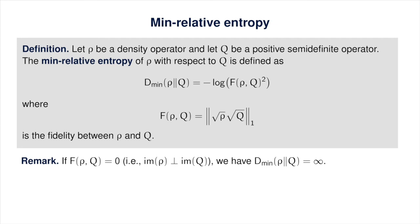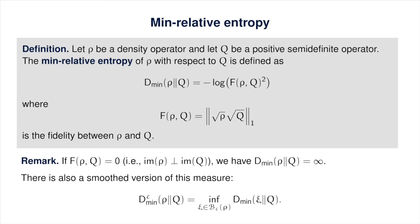In the case that the fidelity between rho and q is zero, we make the natural interpretation that the negative log of zero is equal to positive infinity. There's also a smooth version of the min-relative entropy, which is defined in a completely analogous way to the smooth max-relative entropy. The smoothing can be done with respect to whatever notion of epsilon-closeness you wish to consider. We won't discuss the smooth version further, but it does exist and there are interesting things that can be said about it.